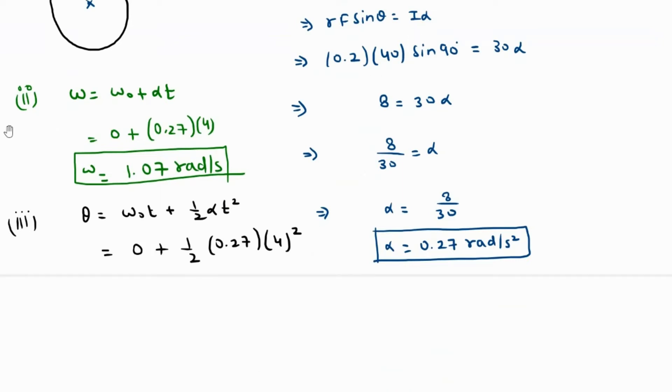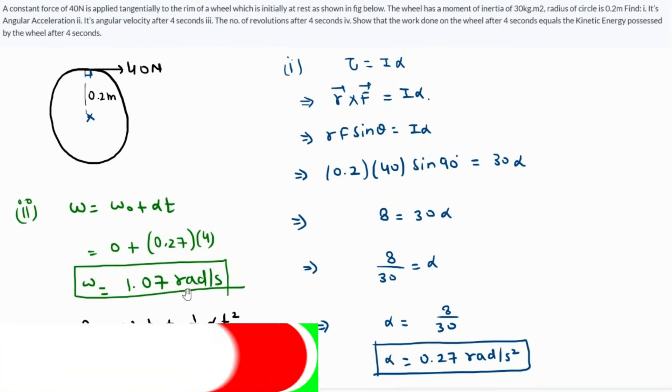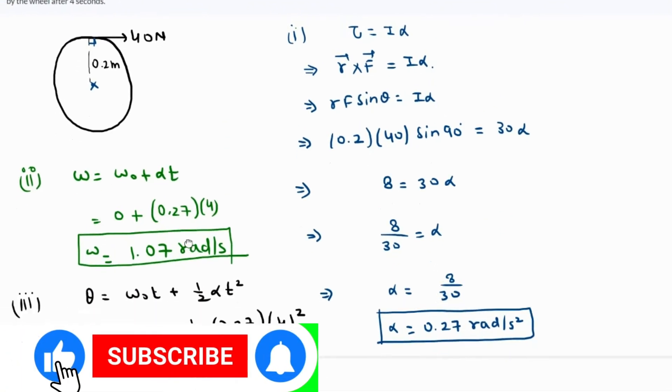We have 4 squared, so this value comes out as 0.27 times 16 over 2, which is 2.16. But what is this 2.16? This 2.16 is in radians, but they need the number of revolutions.